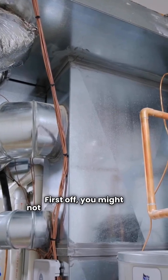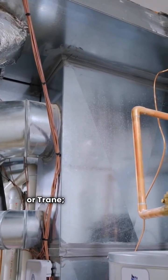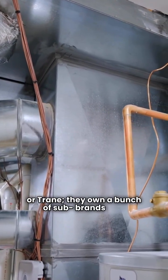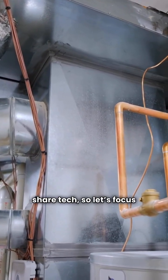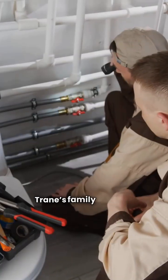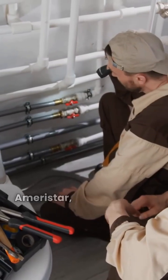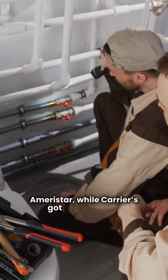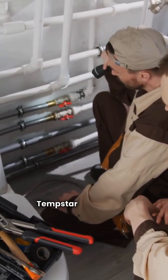First off, you might not just be buying a Carrier or Trane—they own a bunch of sub-brands that share tech, so let's focus on the best models. Trane's family includes American Standard and Ameristar, while Carrier's got Arco Air and Tempstar in its corner.